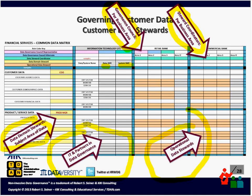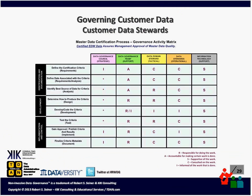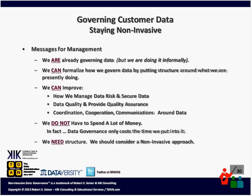Operational data stewards exist where the rows meet the columns in the common data matrix — where in their part of the organization they use that type of data. Here's an example using a master data and customer data certification process: these may be the steps we want to follow, and these are the different roles defined in our pyramid diagram — whether those people are informed, accountable, consulted, responsible, or supportive, however you use RACI in your organization. In each block, you can specify what this role does in that step, making very clear how each person defined in the governance program participates.